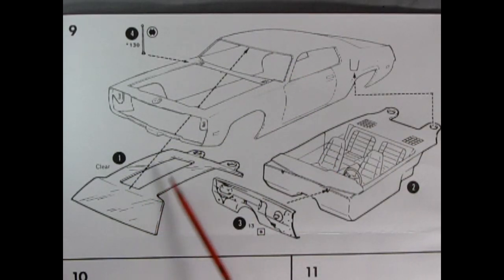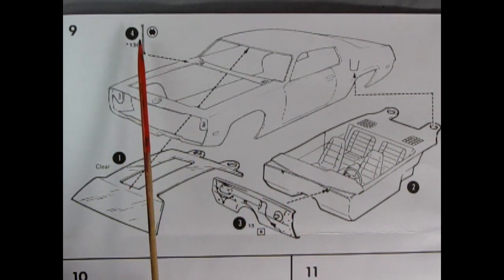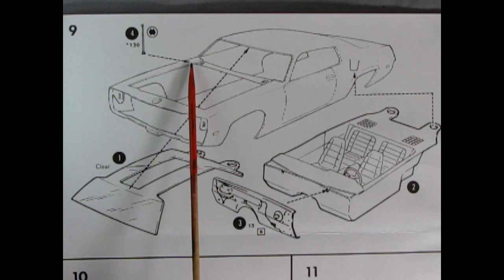Step nine shows our body and interior assembly starting with our clear windows which glue up into the body shell followed by our interior bucket and then our firewall, and to finish it all off this nice little antenna goes toward the back end of the fenders.